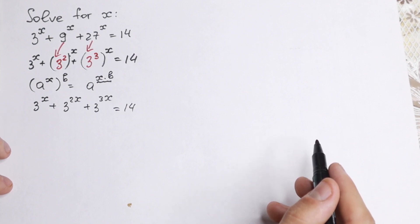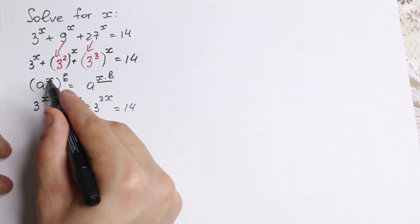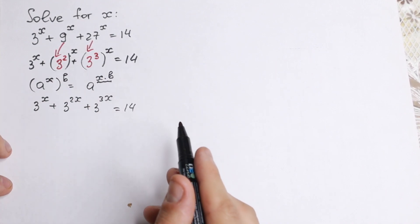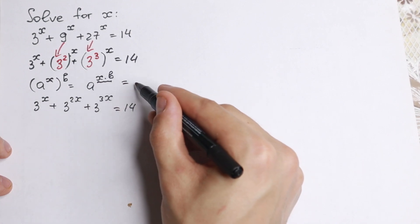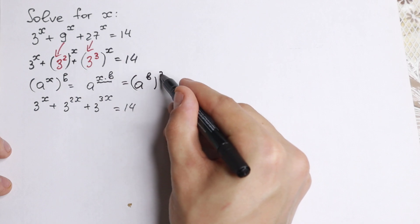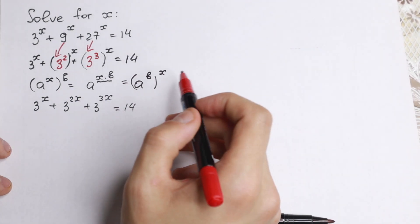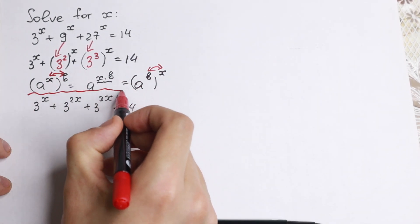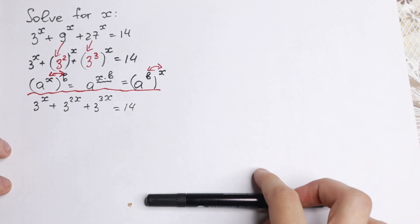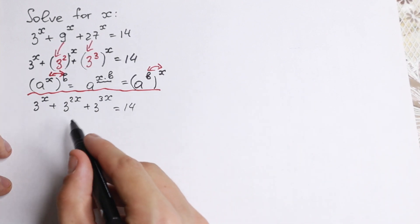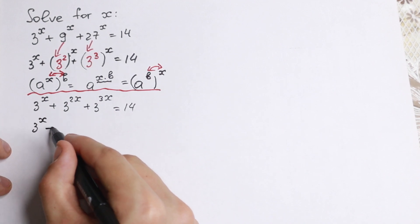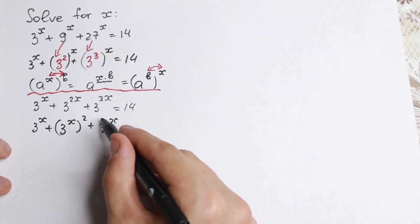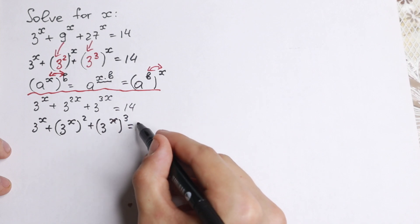This rule also works in reverse — we can swap the two numbers in the exponent since we have a product. It doesn't matter if you multiply 2 times x or x times 2. So we rewrite it as 3 to the x, plus 3 to the x squared, plus 3 to the x cubed, equal to 14.